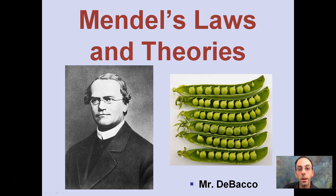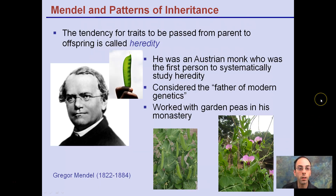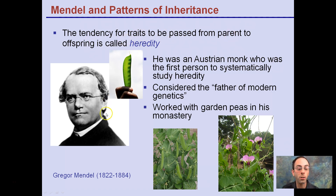Based on all the experiments Mendel developed and did, he came up with some laws and some theories. We're going to look at some of those right here, studying just a simple garden pea in his monastery in Austria. He's the first one to come up with the idea of heredity and is considered the father of modern genetics, working with garden peas in his monastery in Austria.